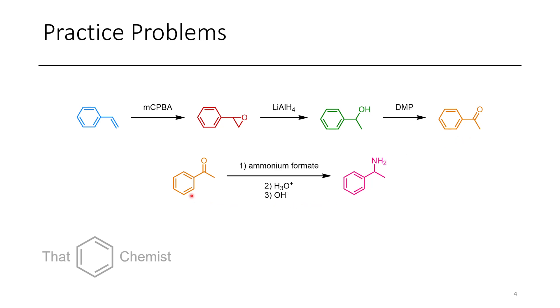Now once we have this acetophenone, all we have to do is treat it with ammonium formate, acid, and base — this is going to accomplish the Eschweiler-Clarke reaction, which will give us this NH₂ product.